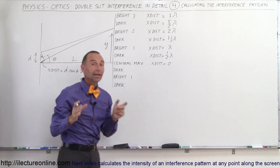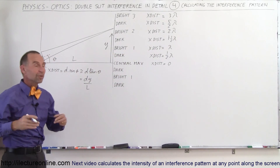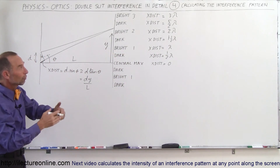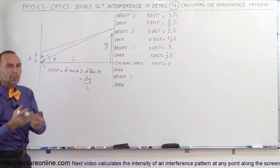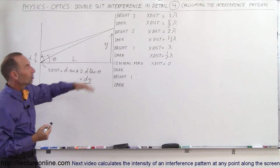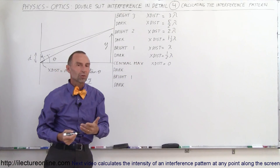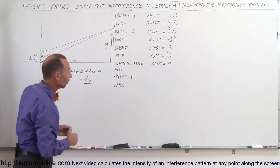That's why we get an interference pattern — because each time the path difference is an integer number of wavelengths, we always get constructive interference. If it's an integer number plus a half wavelength, we get destructive interference.